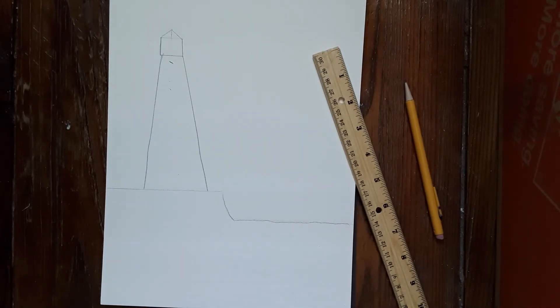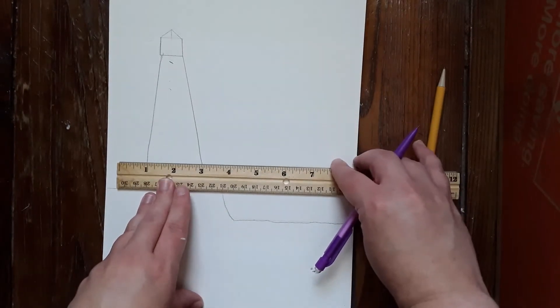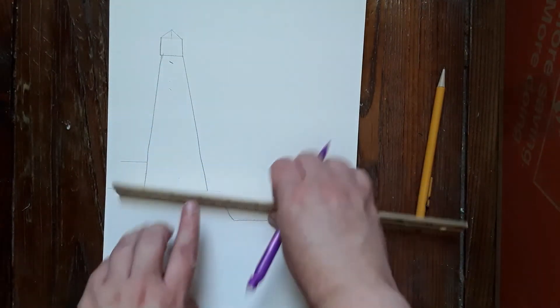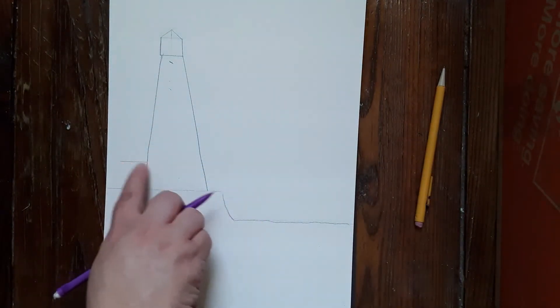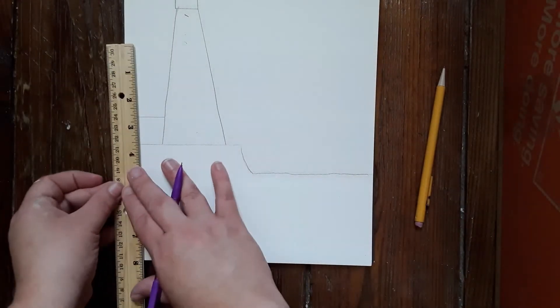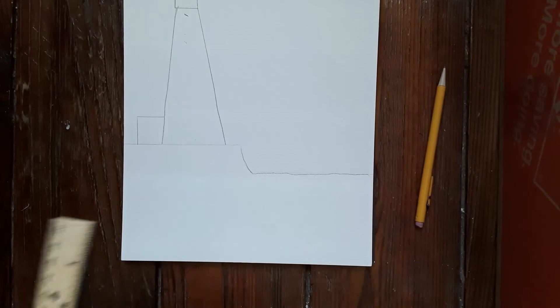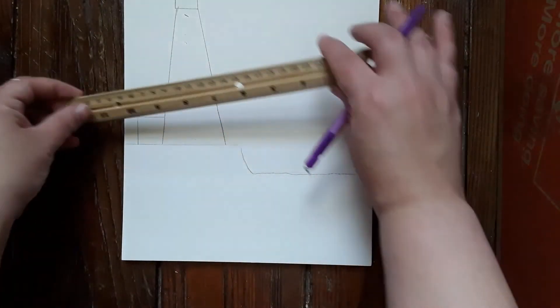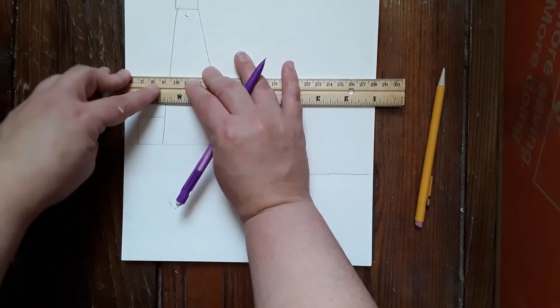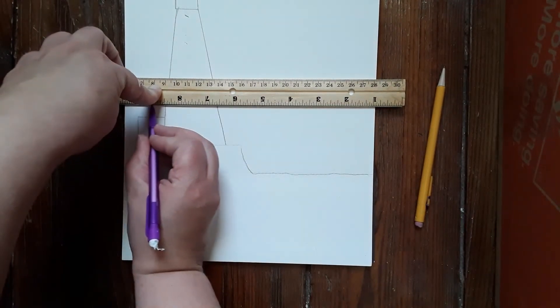Before I move on, usually a lighthouse has a little house next to it, so I'm going to draw a horizontal line about an inch up and I'm going to create a box. I'm just going to close up the box to the ground and then I'm going to create another horizontal line but I'm not going to make it as big. That was like an inch, I'm doing about a half an inch, and then I'm going to draw a diagonal line for the roof.